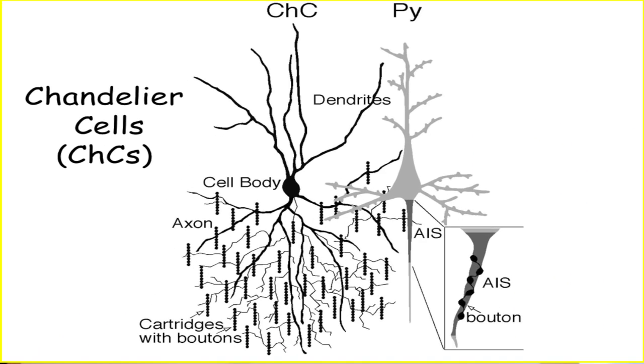Among all the diverse GABAergic interneuron subtypes, chandelier cells, also referred to as axo-axonic cells, are arguably the most distinctive one.